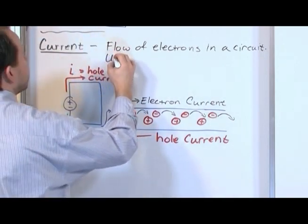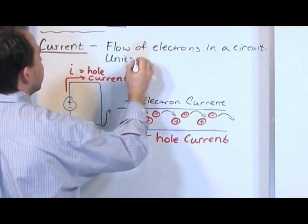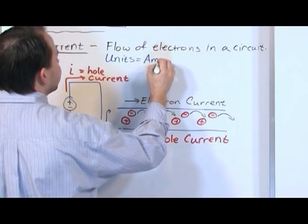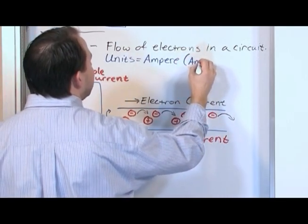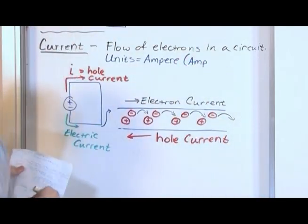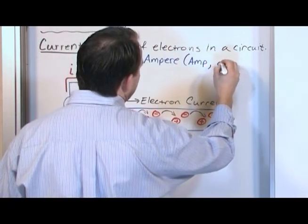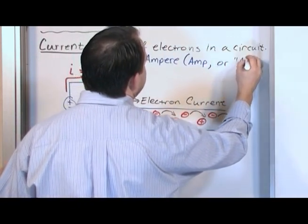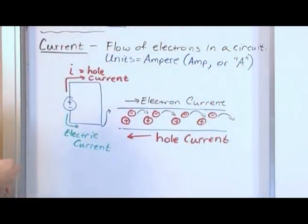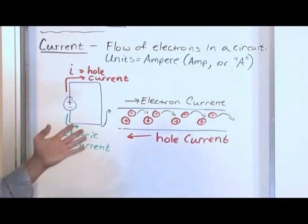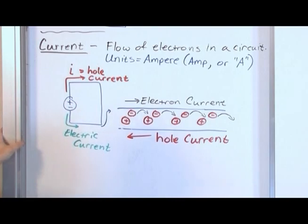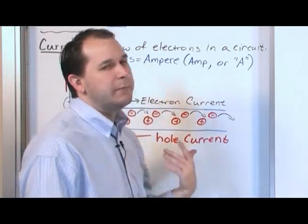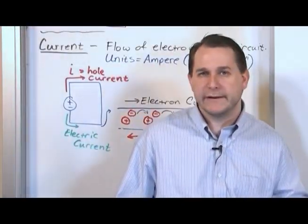The units for current is the ampere, which is also called an amp, or you can call it simply A. The higher the number of amps, the higher the current going through the circuit. Basically, an ampere is telling you how many charges are moving through your circuit per second.